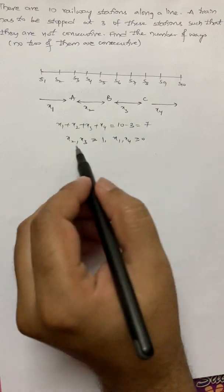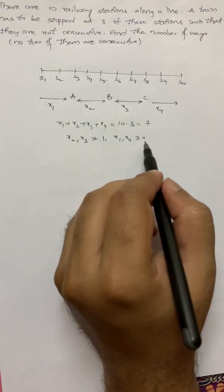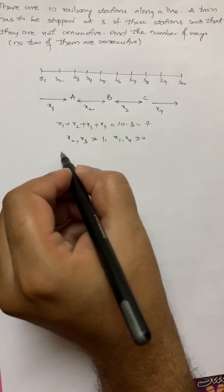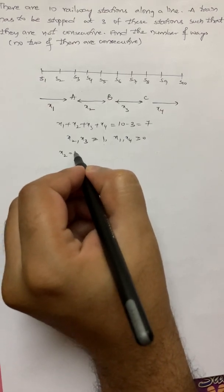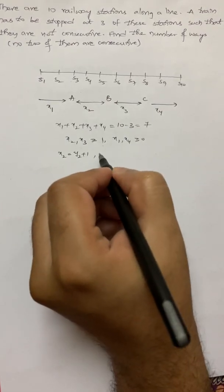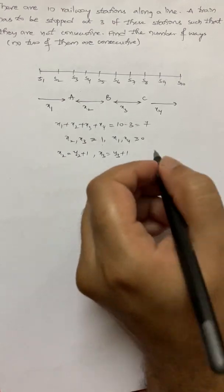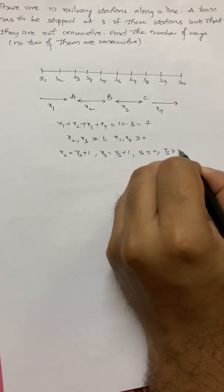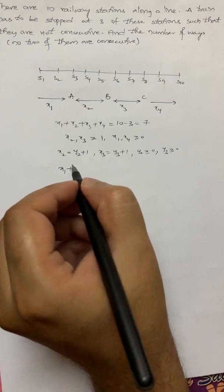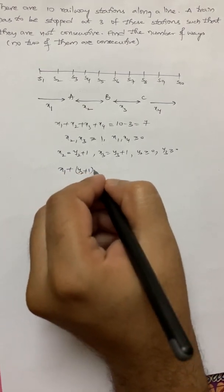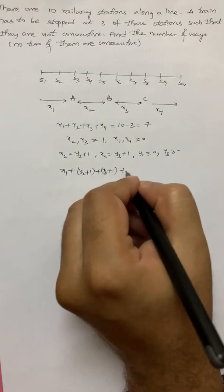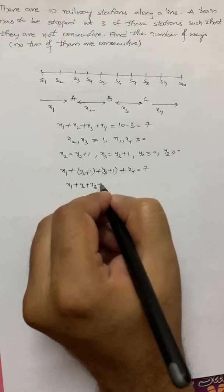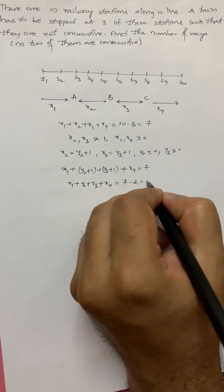Here the variables have different answers. We will convert everything to either 1 or 0. We will consider x2 is greater than or equal to 1. Consider x2 is equal to y2 plus 1 and x3 is equal to y3 plus 1, so that y2 is also greater than or equal to 0. x1 plus x2 is y2 plus 1, this is y3 plus 1 plus x4 is equal to 7. x1 plus y2 plus y3 plus x4 is equal to 7 minus 2, 5.